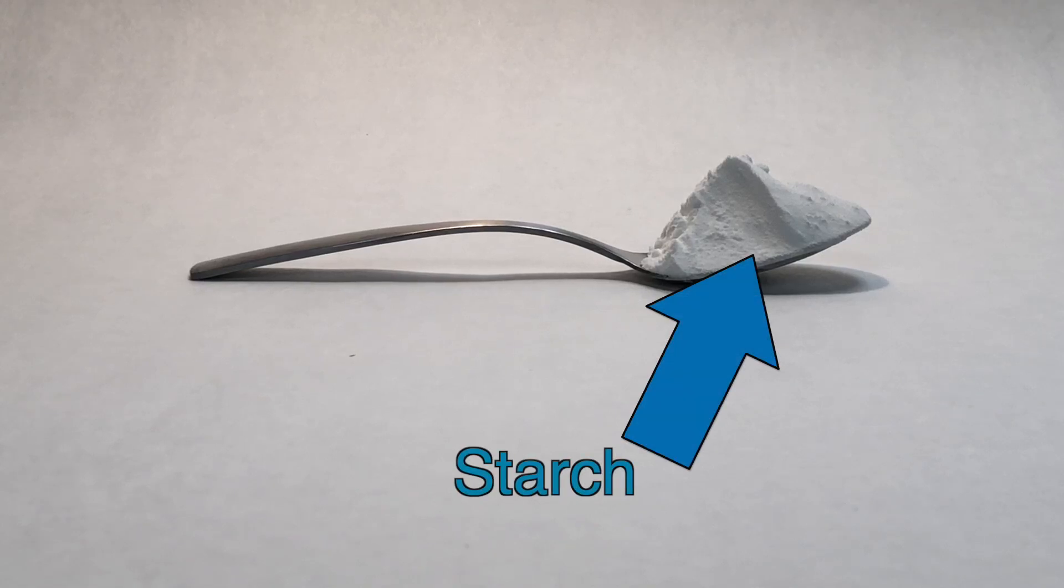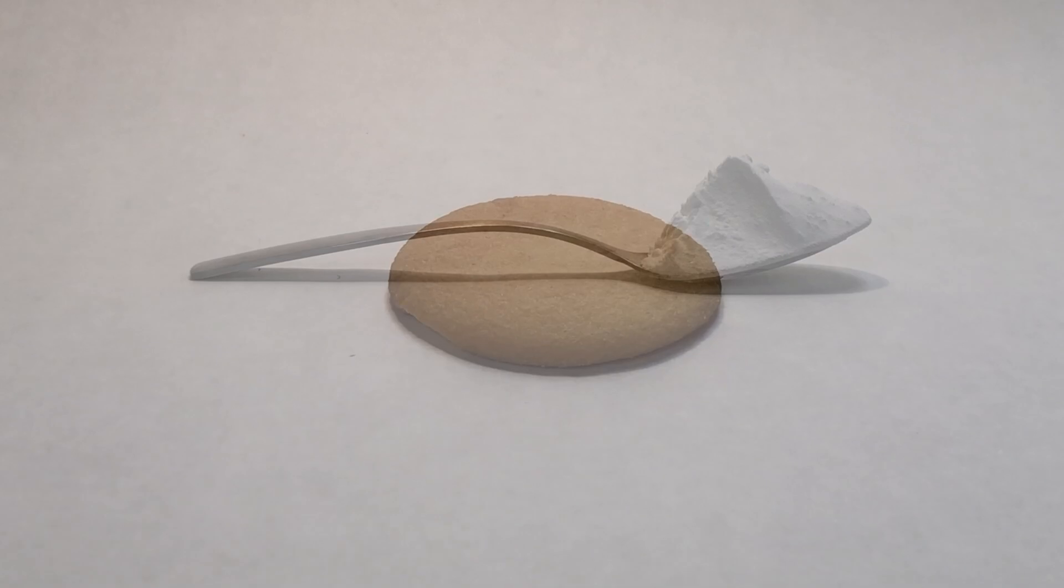Starch is a type of carbohydrate that is found in large quantities in foods that contain wheat, corn, potatoes, or rice.